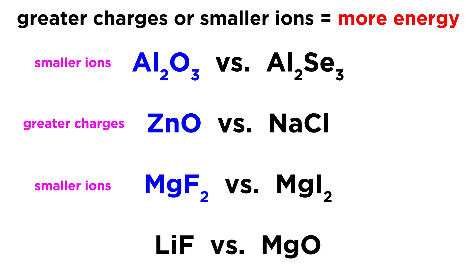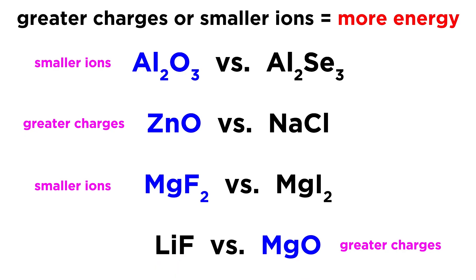Lastly, LiF versus MgO — looking at the charges: lithium fluoride will commonly make plus 1 and minus 1 charges. Magnesium oxide has 2⁺ and 2⁻. Because magnesium oxide has greater charges, it is going to have the greater lattice energy. That is the answer for all four.